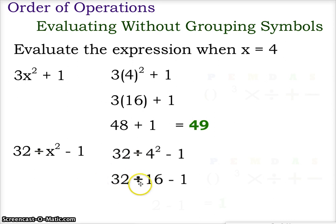Now we have 32 divided by 16 minus 1, and this gives us a chance to use multiplication and division before addition and subtraction. So 32 divided by 16 gives us 2, and 2 minus 1 of course gives us a final value of 1.